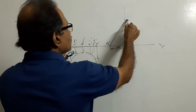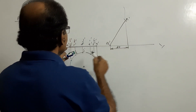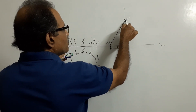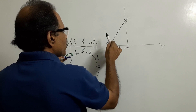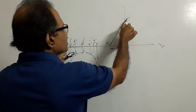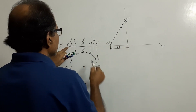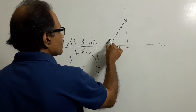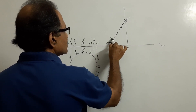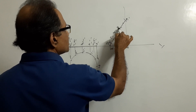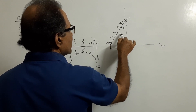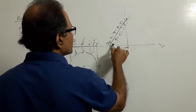Take the distance A dash to G dash and mark here G1 dash. Take the distance A dash to F dash and mark a point here. Take the distance from G dash backwards and get a point. Take the distance A dash to E dash, mark from here, and take the same distance from G dash backwards to get the point. Mark: G1 dash, C dash, D dash, E dash, F dash, G dash, H dash, I dash, J dash, K dash, L dash.